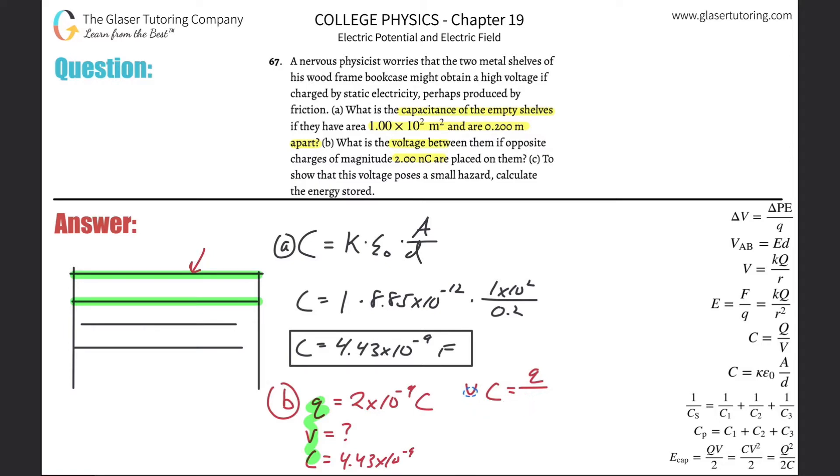To find the voltage, just do a little rearrangement and there you go. The charge is going to be 2 times 10 to the minus 9th divided by the capacitance 4.43 times 10 to the minus 9th. I'm going to use the exact value when I do the calculation. So 2 times 10 to the minus 9th divided by that exact value from before.